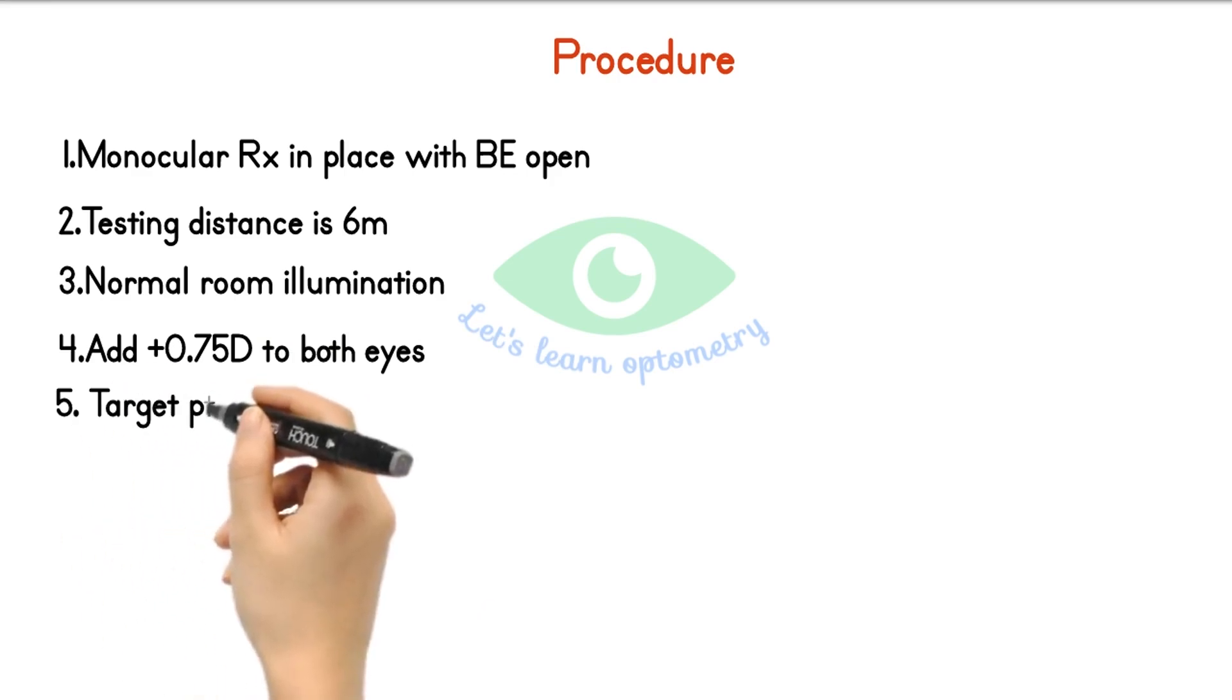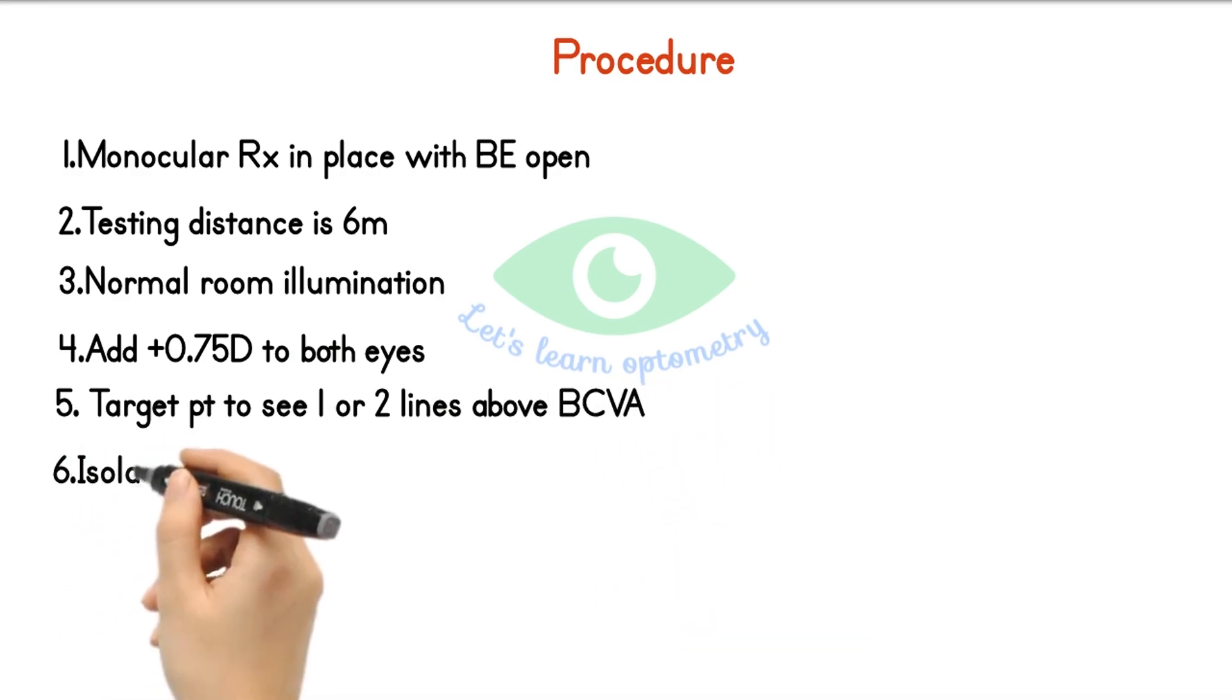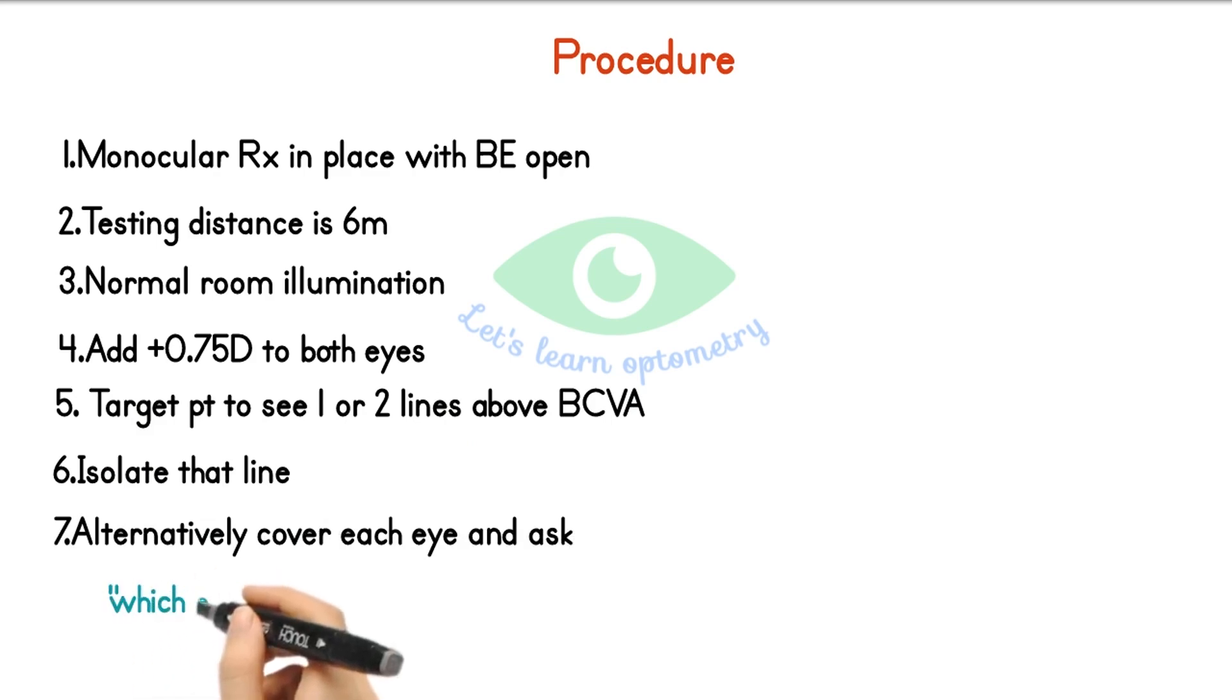Ask the patient to look at 1 or 2 lines above the BCVA and isolate that line for easy identification. Now alternately cover one eye and then the other while asking the patient which eye sees the chart more clearly. You can ask either eye 1 or eye 2, or right eye or left eye.